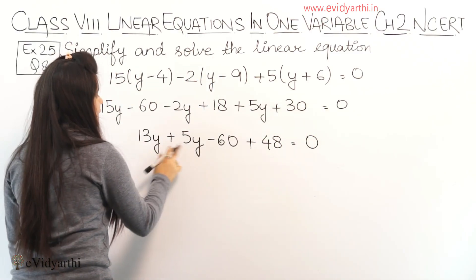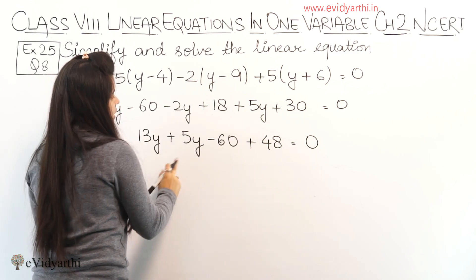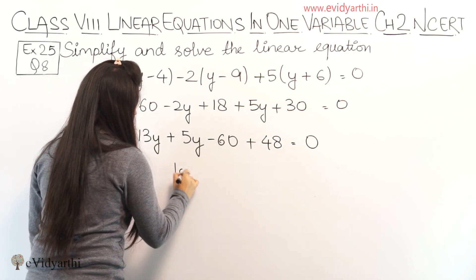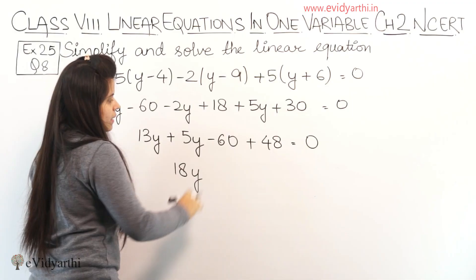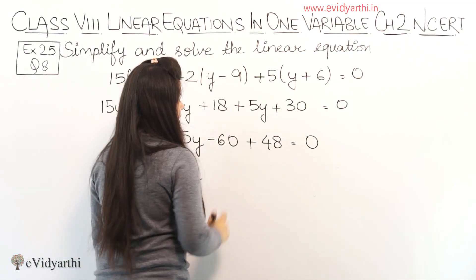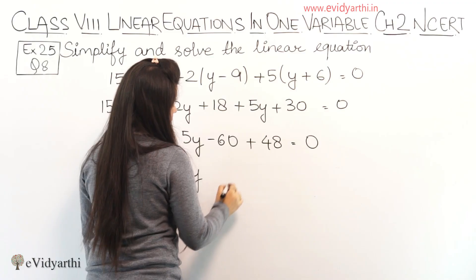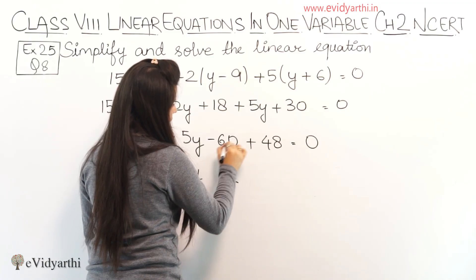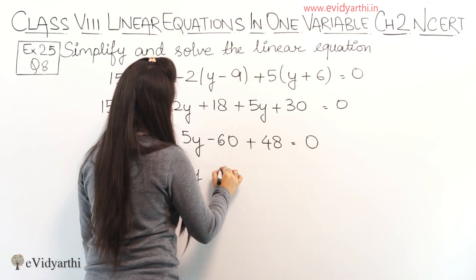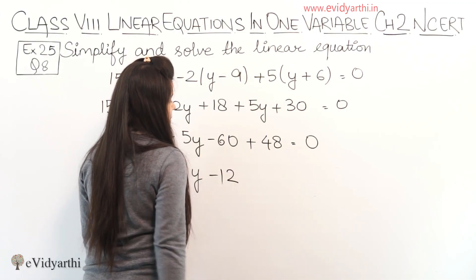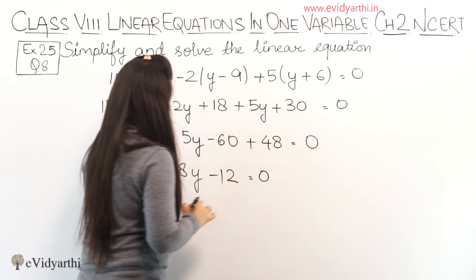Now let's solve this. 13 plus 5 is 13, 14, 15, 16, 17, 18. So we will get 18y. Now plus minus minus, 60 minus 48. So 10 minus 8 is 2, and this will become 5. 5 minus 4 is 1, and minus will remain. Equals to 0.